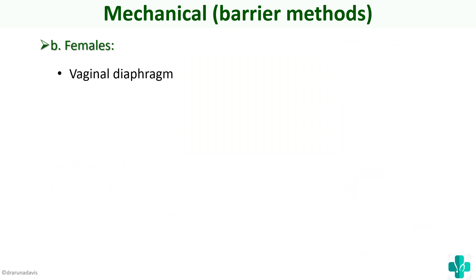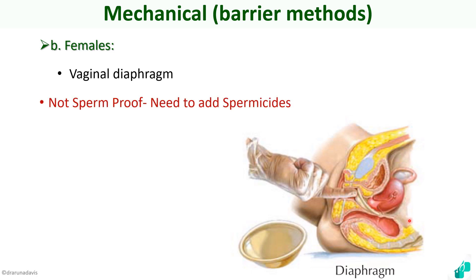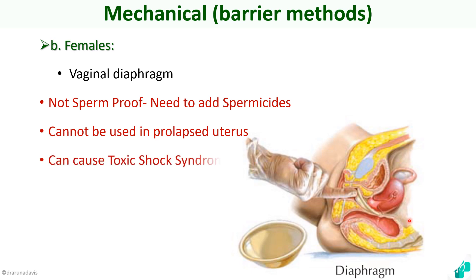Another option is vaginal diaphragms, which can be inserted into the cervical canal or against the vaginal wall. The problem is that they are not sperm-proof, so spermicides need to be added along with them. Disadvantages include: cannot be used with a prolapsed uterus, can cause toxic shock syndrome if kept in for a long time, and can cause cervical erosion and urinary tract infection.